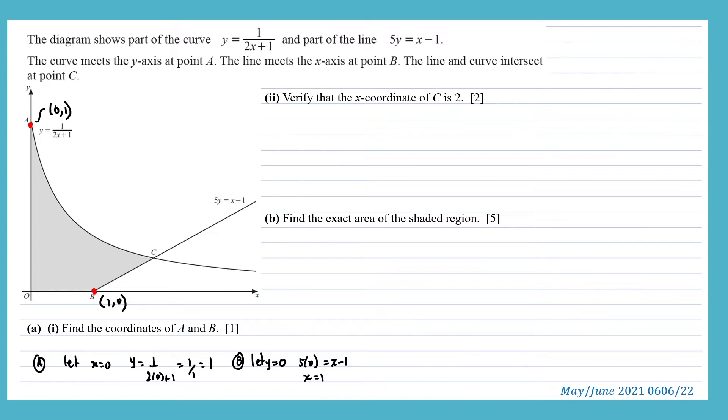In part 2, we need to verify that the x coordinate of C is 2. We will do that by forming simultaneous equations and solving them. So we have y equals 1 over 2x plus 1. And the straight line is 5y equals x minus 1. We could then substitute y into here.